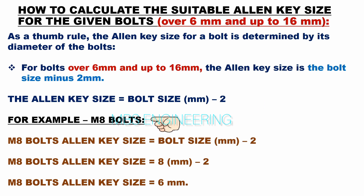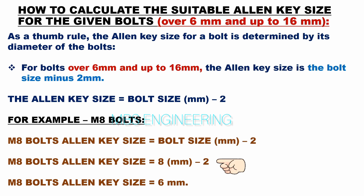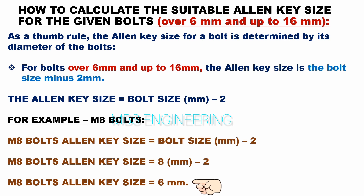Sample calculation for M8 bolts: allen key size = bolt size (mm) − 2 mm = 8 mm − 2 mm = 6 mm. Therefore, M8 bolts require a 6 mm allen key.